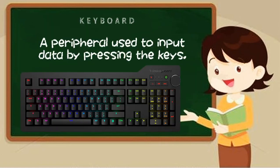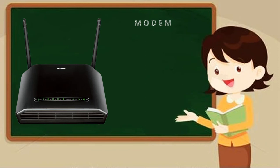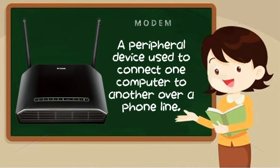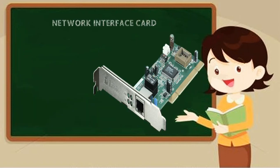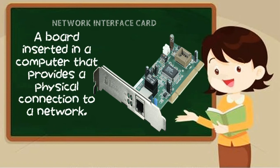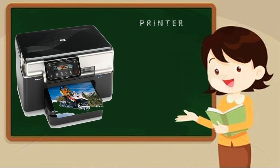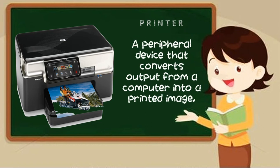Keyboard — a peripheral used to input data by pressing the keys. Modem — a peripheral device used to connect one computer to another over a phone line. Network interface card — a board inserted in a computer that provides a physical connection to a network. Printer — a peripheral device that converts output from a computer into a printed image.